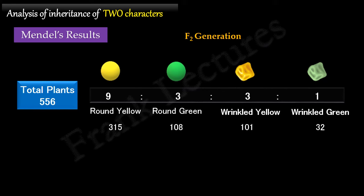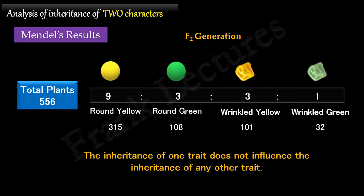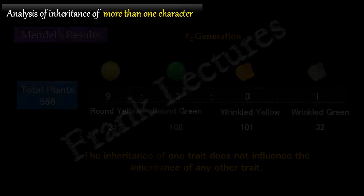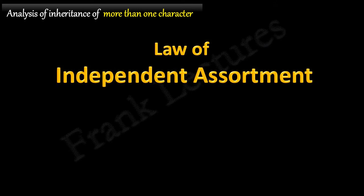On the basis of his results, Mendel proposed that the alleles for seed shape and seed color originally present in each parent would separate from each other and be transmitted independently. The alleles of different genes do not stay together when gametes form, and the inheritance of one trait did not influence the inheritance of any other trait. The results obtained by Mendel's dihybrid cross are the basis of Mendel's second law — the law of independent assortment.